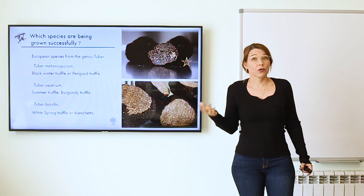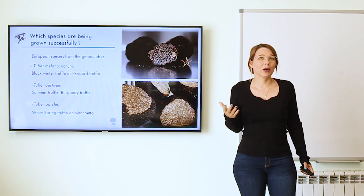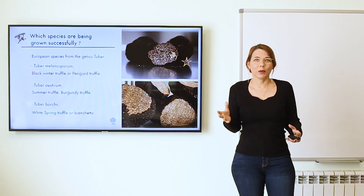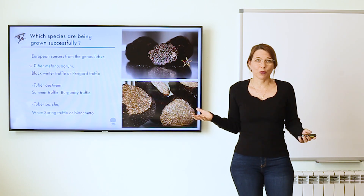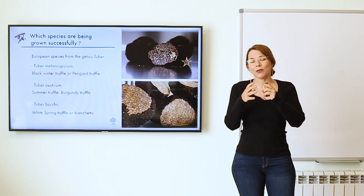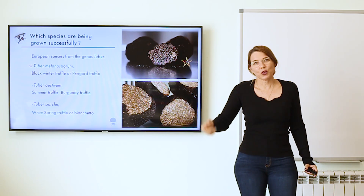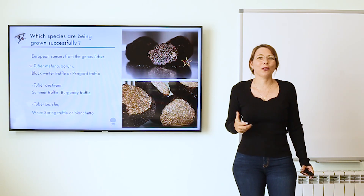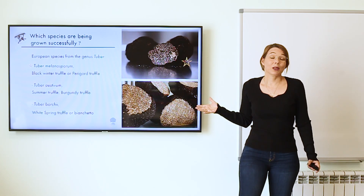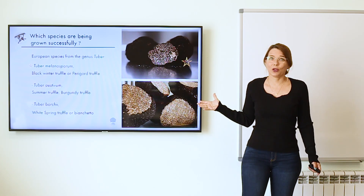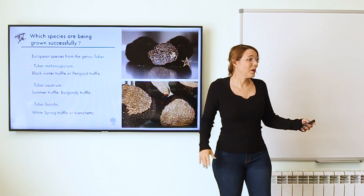Finally we have Tuber borchii — it works, you get a lot of truffles, but we don't know yet if it's going to be economically viable. Normally you get them small because people are not irrigating. We need people to irrigate to see if they'll be big enough to be worth it, because if you get a lot of tiny truffles it's very labor intensive and may not be a good option. At the moment, Tuber melanosporum is the success case.